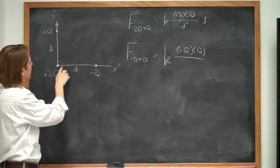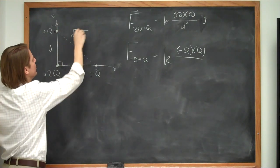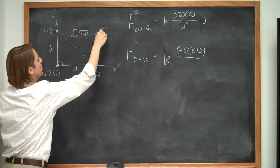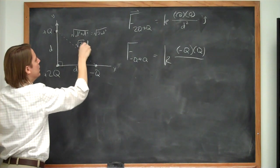And if you're good at your Pythagorean theorem, you know that if this is d and this is d, that this is the square root of d squared plus d squared, which is the square root of 2d squared. So this is the square root of 2 times d.